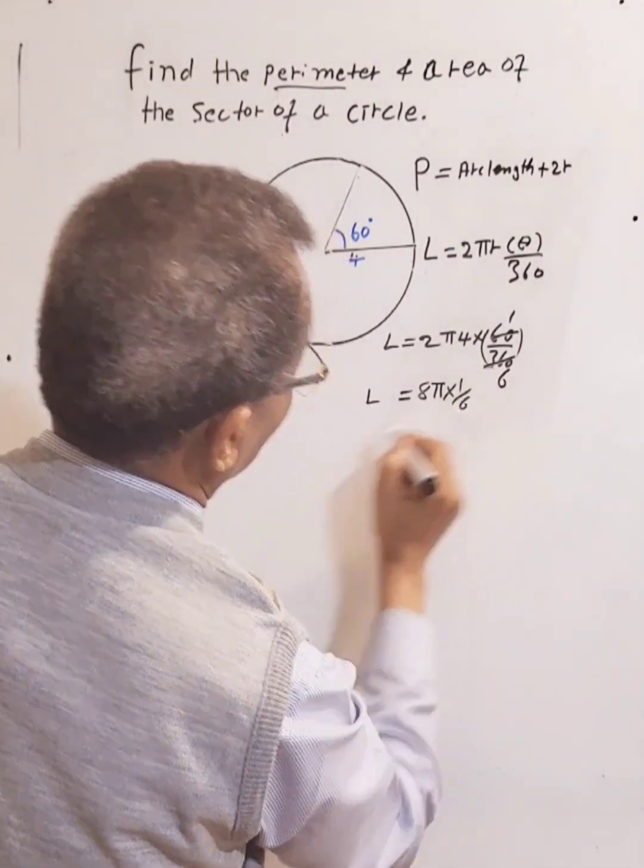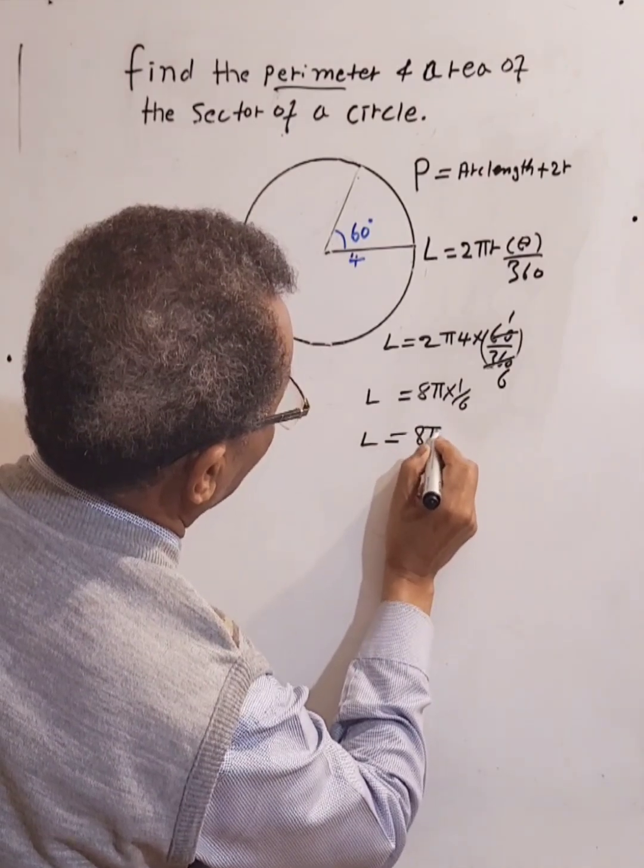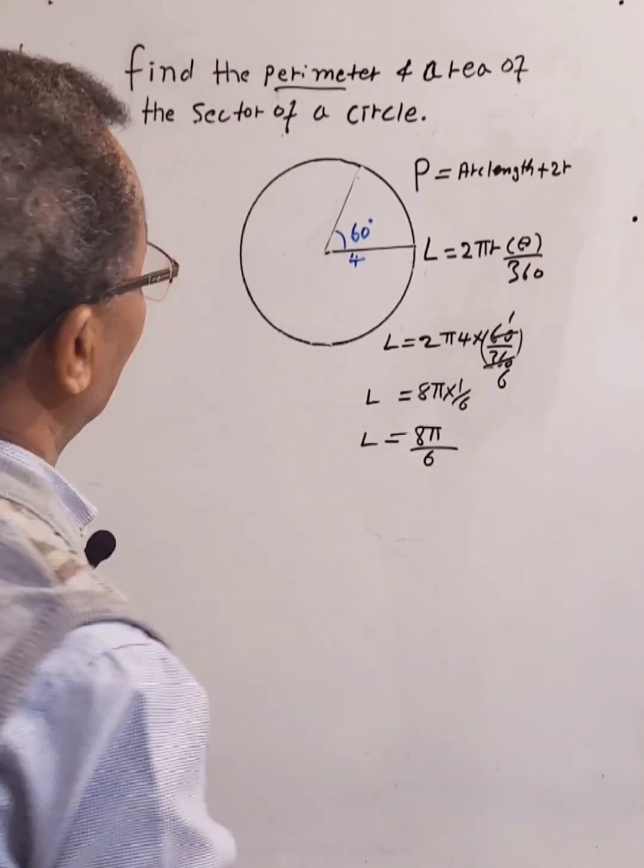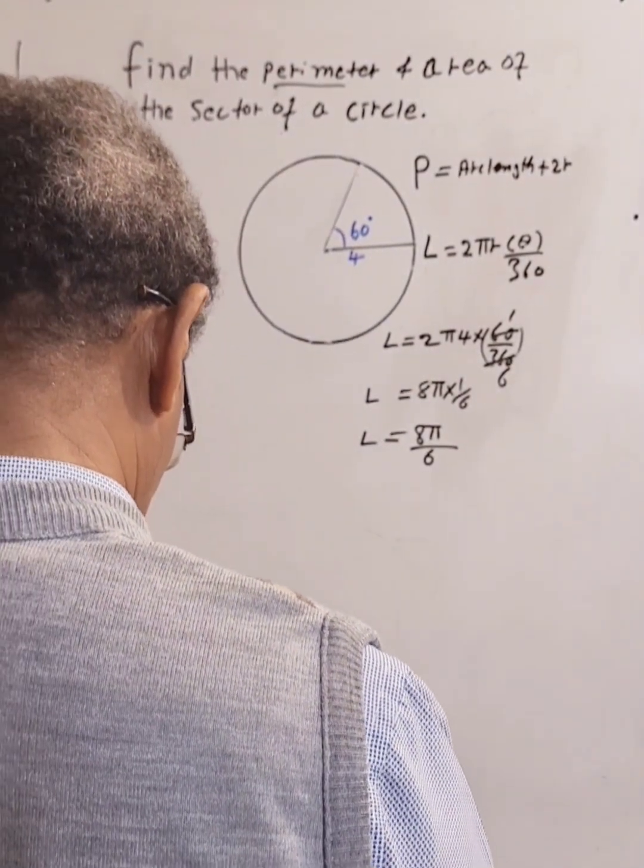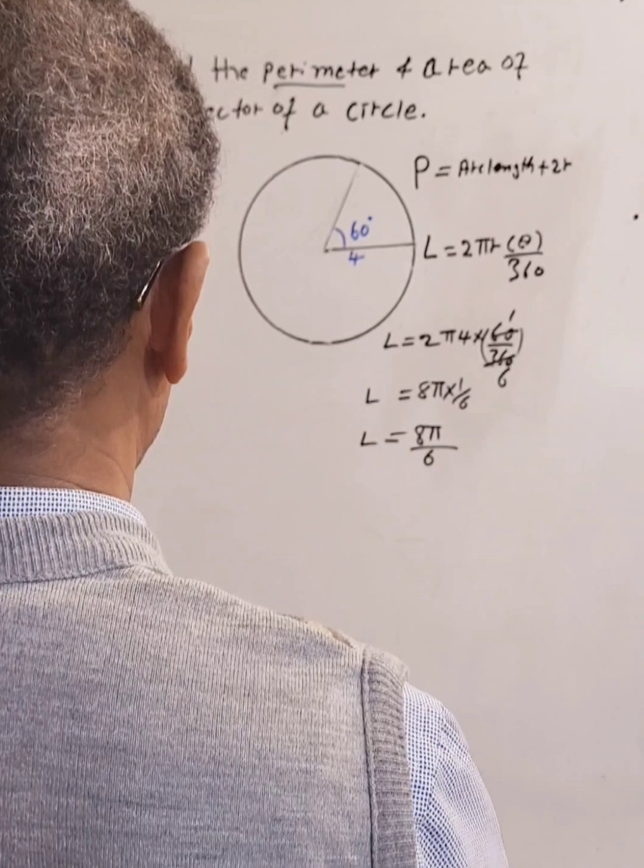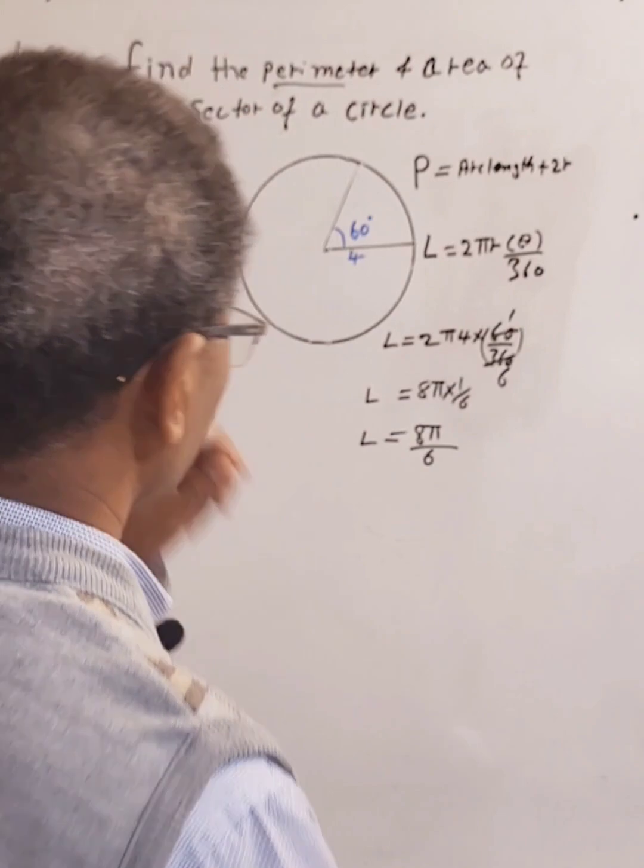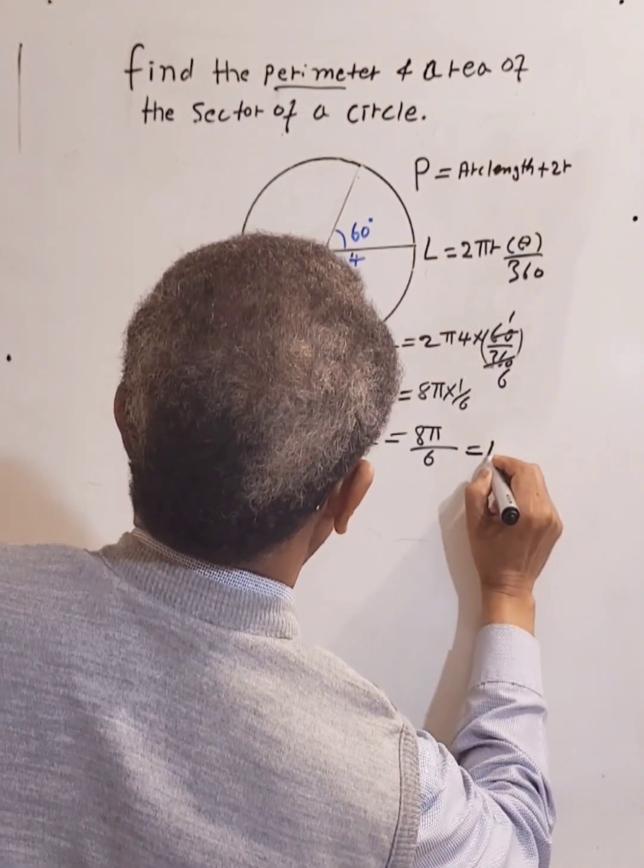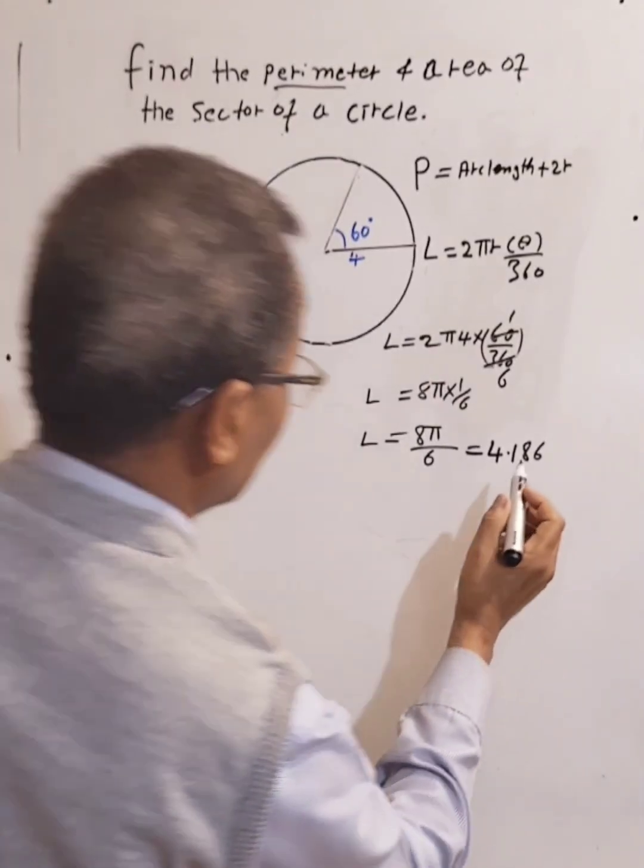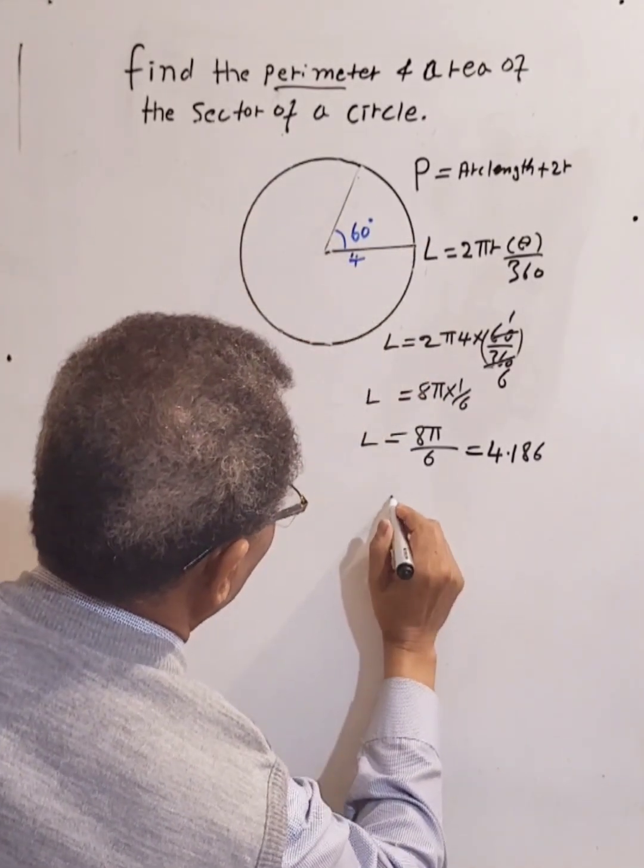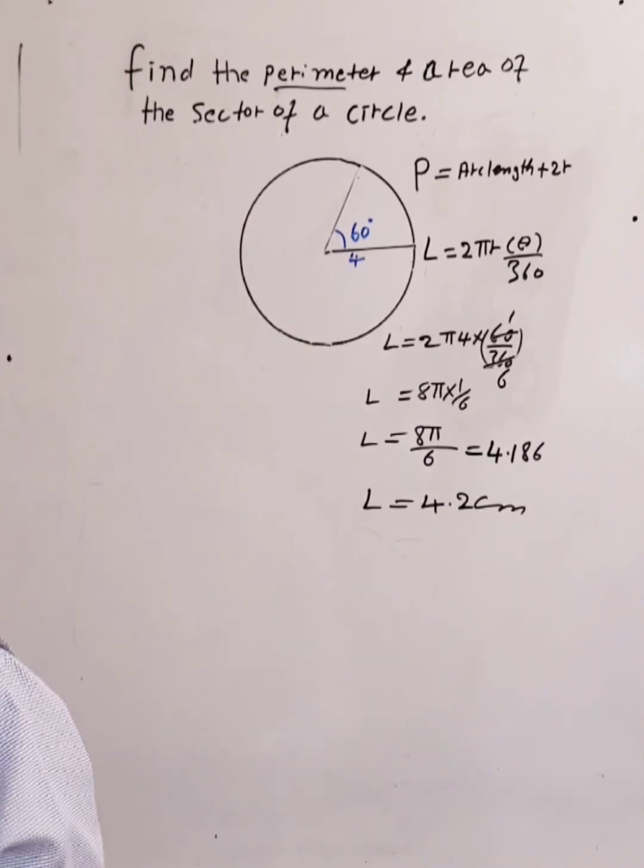So we get 8π over 6. Let's use a calculator: 8 times π over 6. If you round it to one decimal place, it will give us L equals 4.2 centimeters.